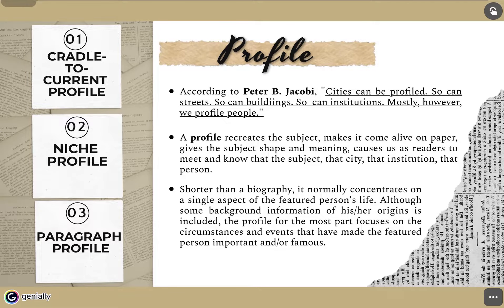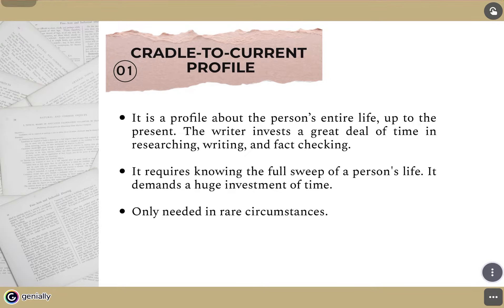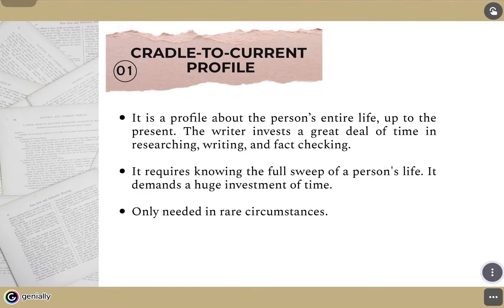Just like the biography, profile also has three types. First, the cradle-to-current profile. It is a profile about the person's entire life, just like the full-length biography. The writer invests a great deal of time in researching, writing, and fact-checking. It also requires knowing the full sweep of a person's life. It demands a huge investment of time and is only needed in rare circumstances, so we cannot always see this type of profile.